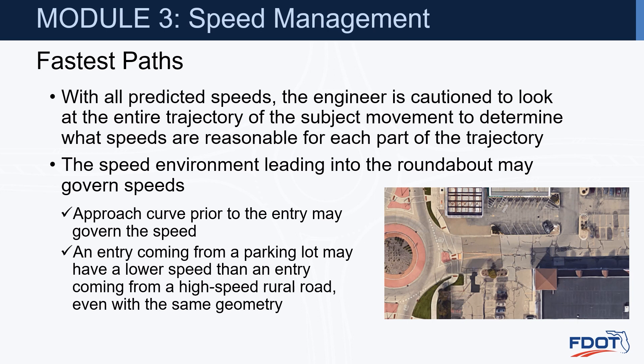The speed environment leading into the roundabout may also govern speeds. An entry coming from a parking lot may have a lower speed than an entry coming from a higher speed roadway, even with the same geometry. So if you have an entry coming from a parking lot area, which is very low speed, you may not be as concerned about having a slow R1 at that location because vehicles approaching are already going slow.